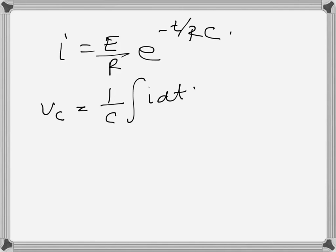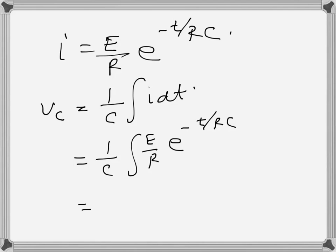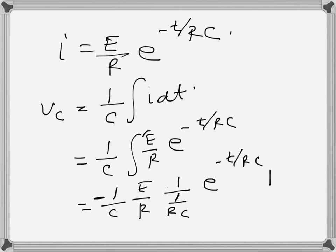To find the voltage across the capacitor Vc, we use the integration expression for voltage. We integrate the current E/R · e^(minus t over RC). The constant E/R comes out, and when we integrate the exponential there will be a negative sign ahead of it, and the coefficient RC will come to the numerator.